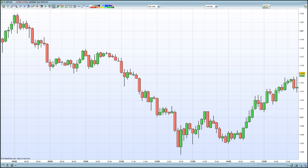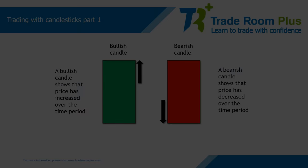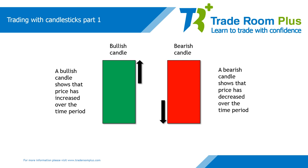Candles tend to be bullish or bearish. On the left, we have a green candle, which represents a bullish candle. Bullish simply means the price has increased over the time period. On the right, we have a red candle, which is bearish. Bearish simply means price has decreased over the time period.